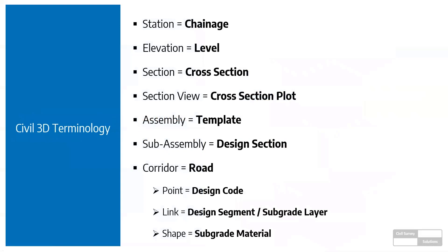We'll look at sample lines, different data sources, section layouts, data information in bands, how you label it, how you project things into your sections, and how you calculate materials and volume tables. In Civil 3D, certain terms are used differently in Australia. For example: station is chainage, elevation is level, section is a cross section, section view is a cross section plot. An assembly and sub-assembly are essentially the template pieces, and the corridor is the road model.